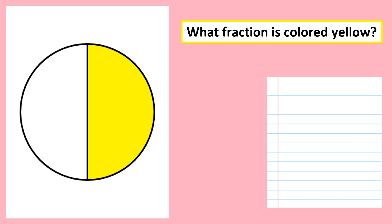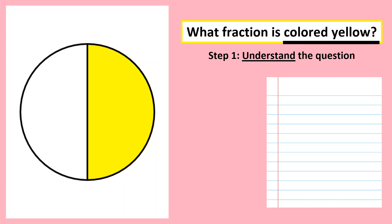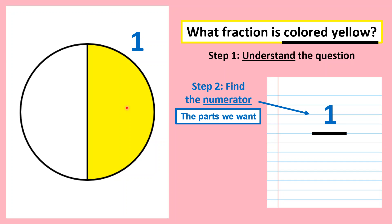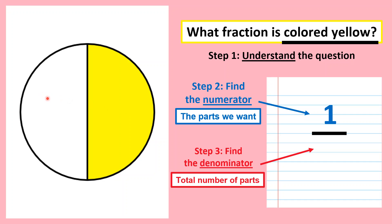Let's look at the first example. The question asks: what fraction is colored yellow? First, understand it — we want the fraction colored yellow. Find the numerator: how many parts are colored yellow? There is only one, so we write one as the numerator. What about the denominator? The denominator is the total number of parts. Let's count: one and two — there are only two. So we write two as the denominator. This is how we write the fraction in numbers.